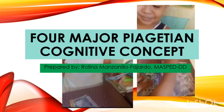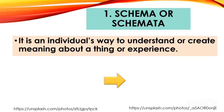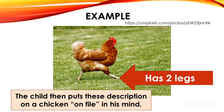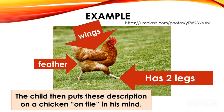The first concept is what we call schema or schemata. Based on this concept, our mind is like a filing cabinet, and each drawer has folders that contain files of things we have experienced. A schema is an individual's way to understand or create meaning about a thing or experience. For example, if a child sees a chicken for the first time, he creates his own schema of what a chicken is — it has two legs, feathers, and wings.